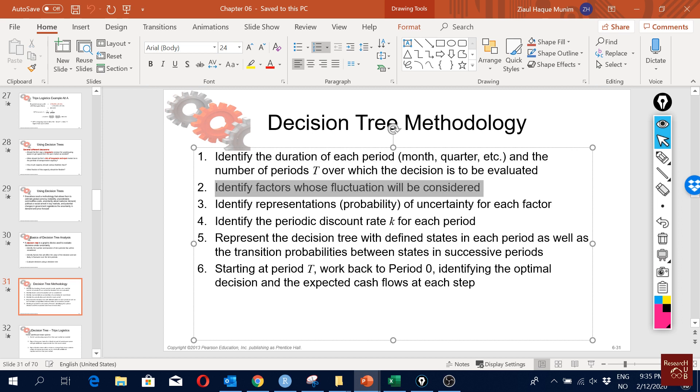The second factor is identify factors whose fluctuations will be considered. There could be a few more different things that can fluctuate over time, but we will consider the most important ones. Then we also have to identify the probability of uncertainty, the probability of the fluctuations.